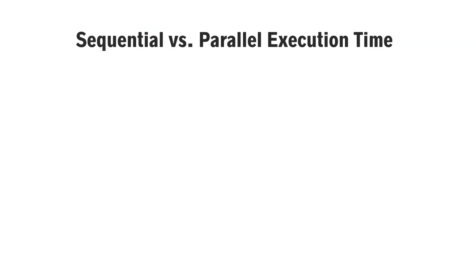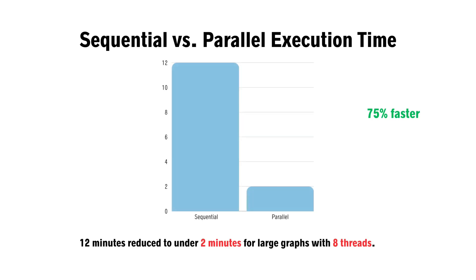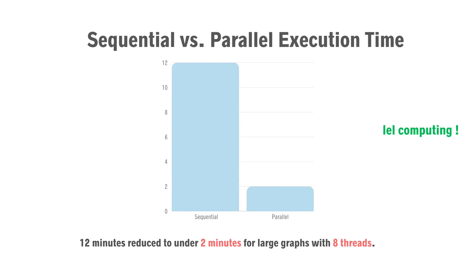Our implementation showed remarkable results. For a graph with 6,999 nodes, parallelising the algorithm reduced computation time from 12 minutes to under 2 minutes on an 8-core processor. This improvement is a game-changer for real-time applications.